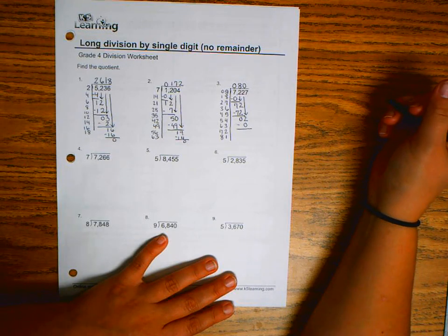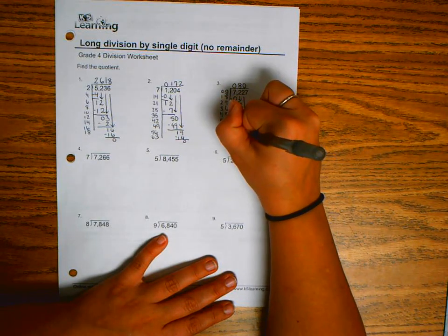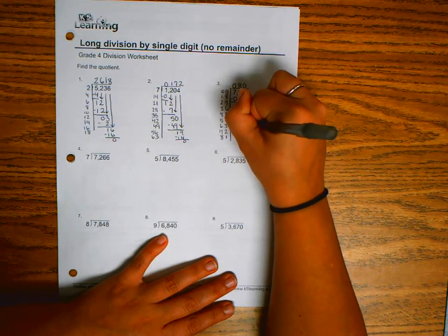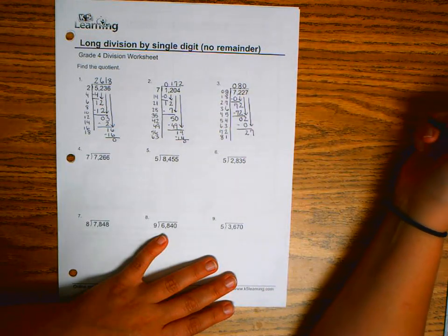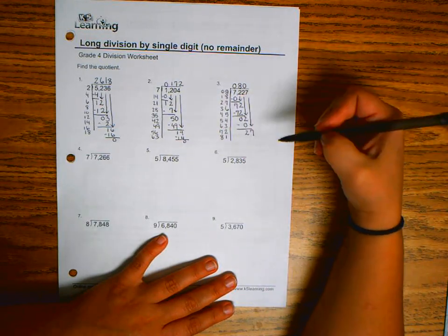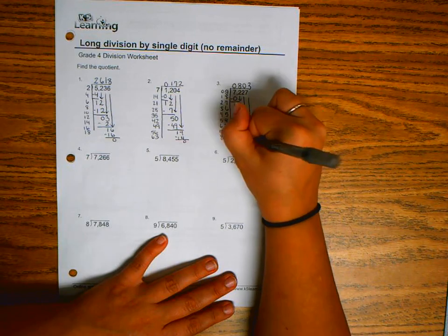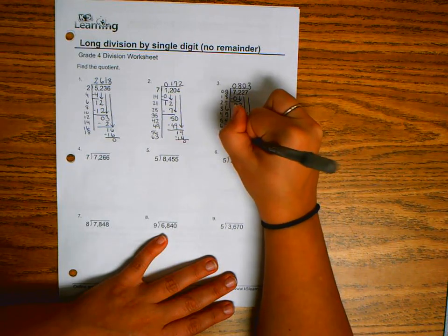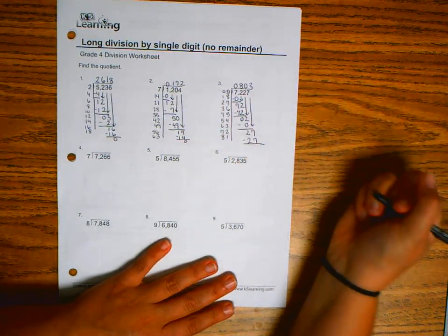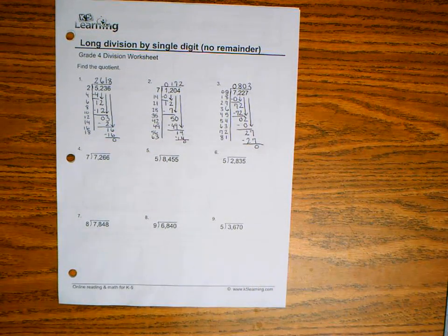Two minus zero is two, and I bring down the seven. Nine can go into twenty-seven three times, and nine times three is twenty-seven. Twenty-seven minus twenty-seven is zero.